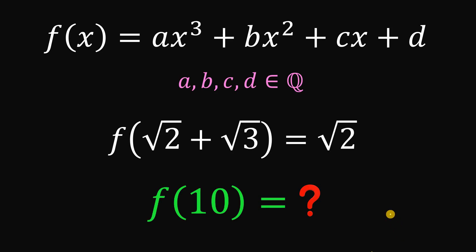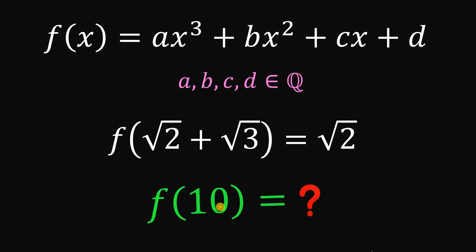Today, we will answer a math challenge given by one of our followers. The question goes like this: given f of x equals ax cubed plus bx squared plus cx plus d, wherein a, b, c, and d are all rational numbers, and it is given that f of square root of 2 plus square root of 3 equals square root of 2. The question is: what is the numerical value of f of 10?